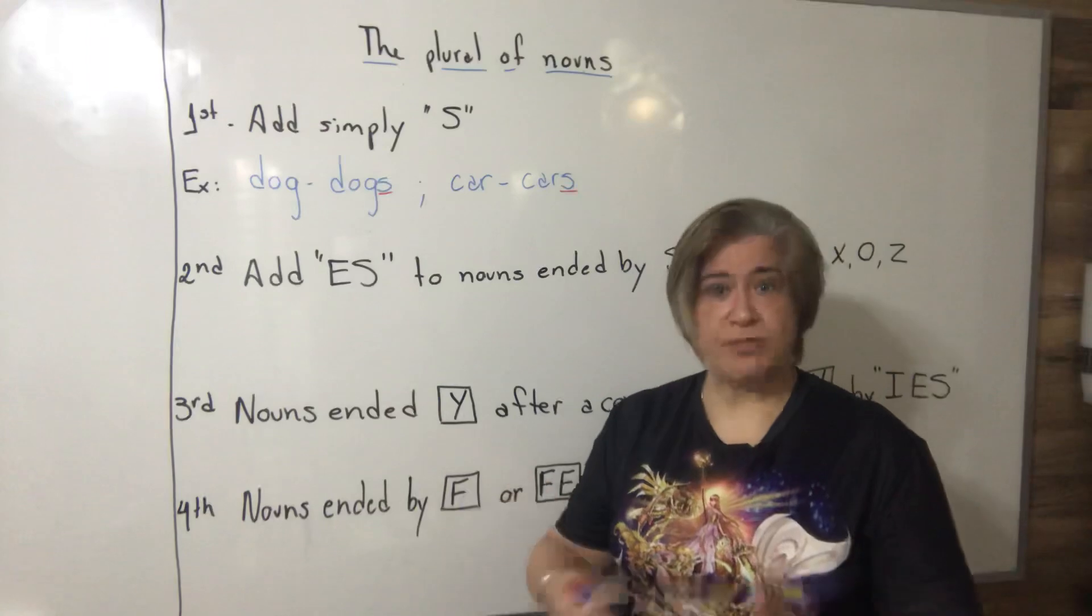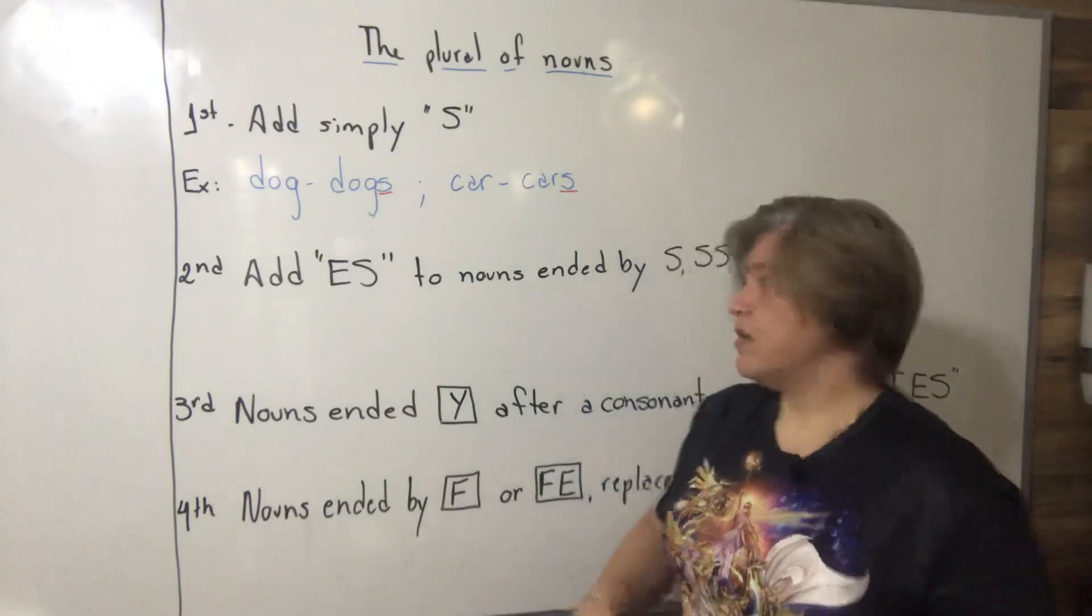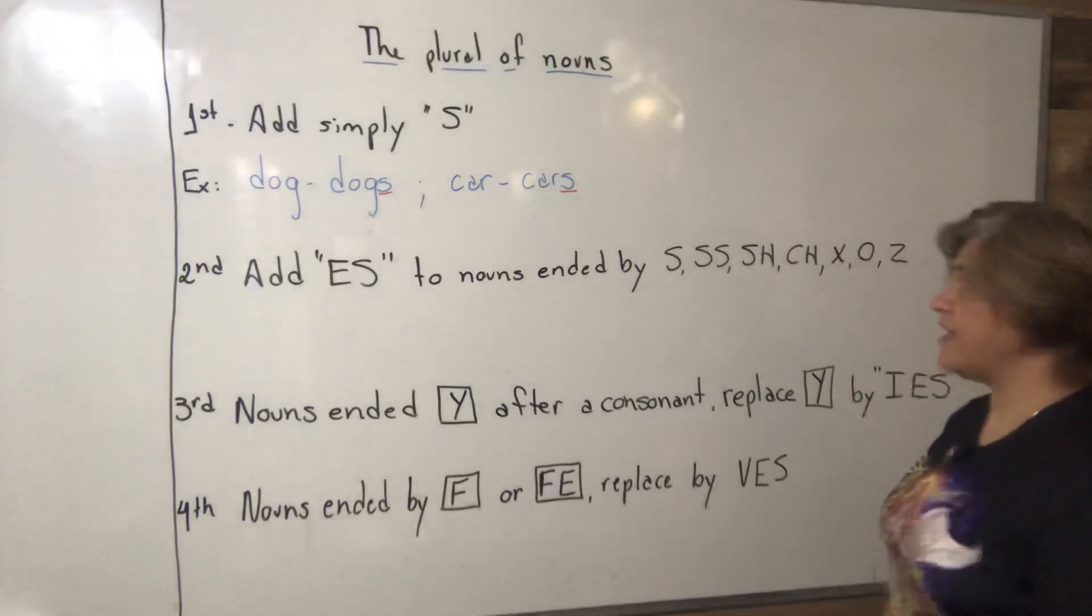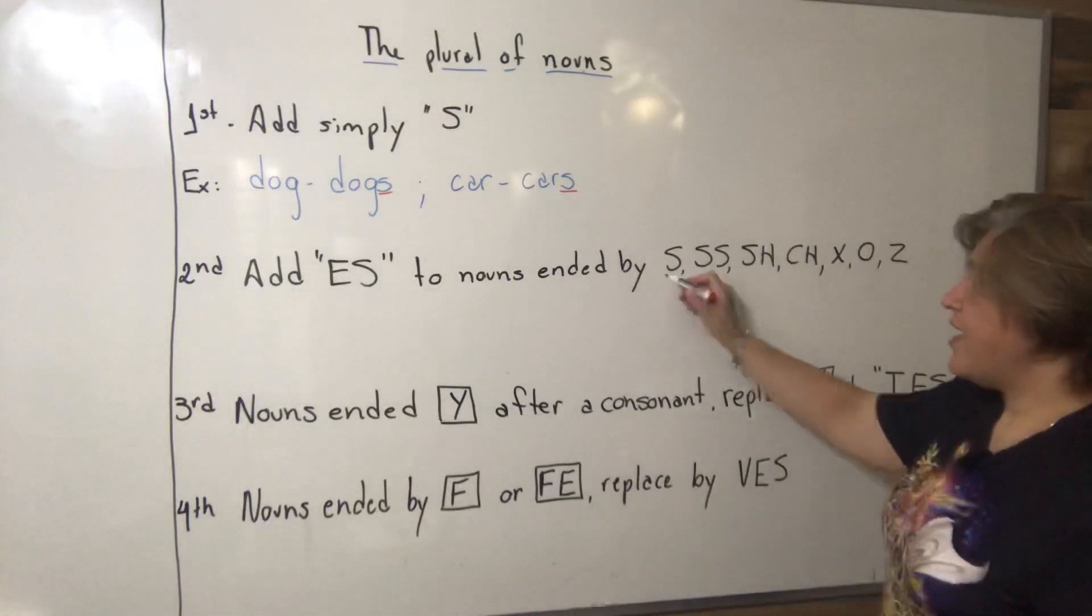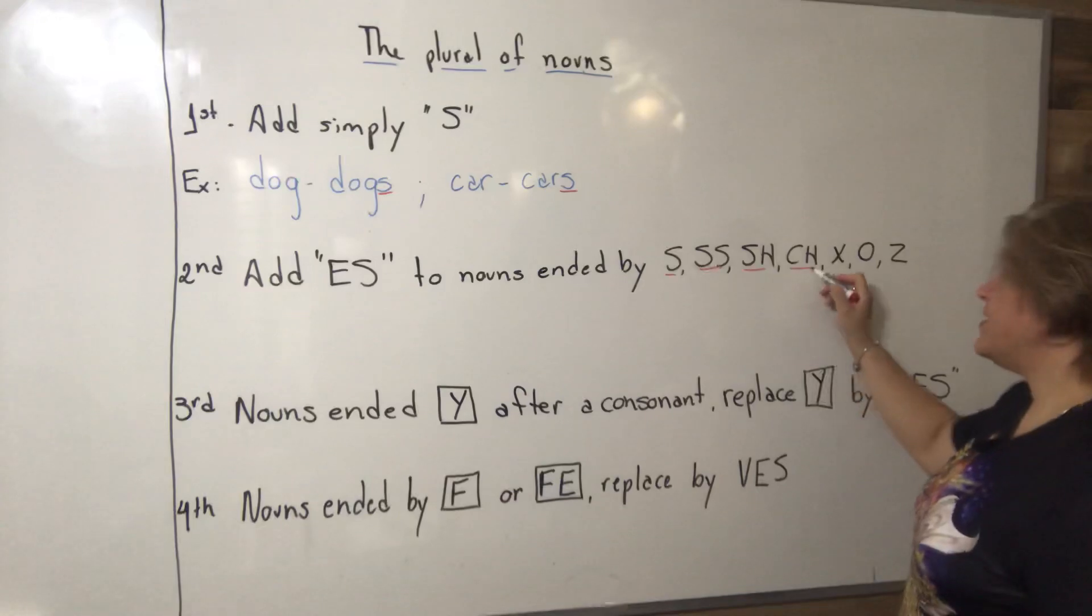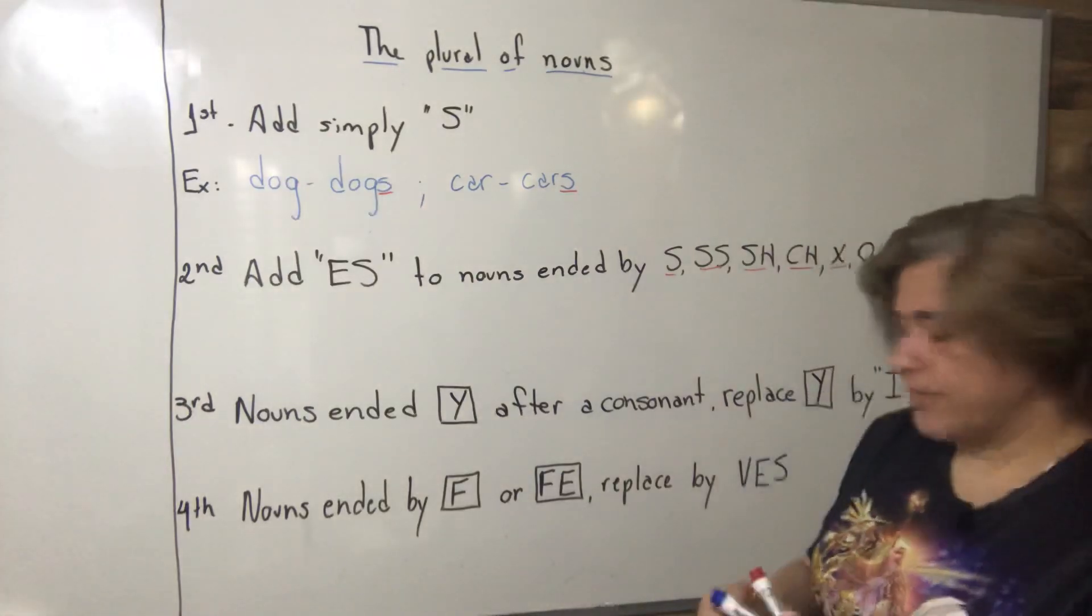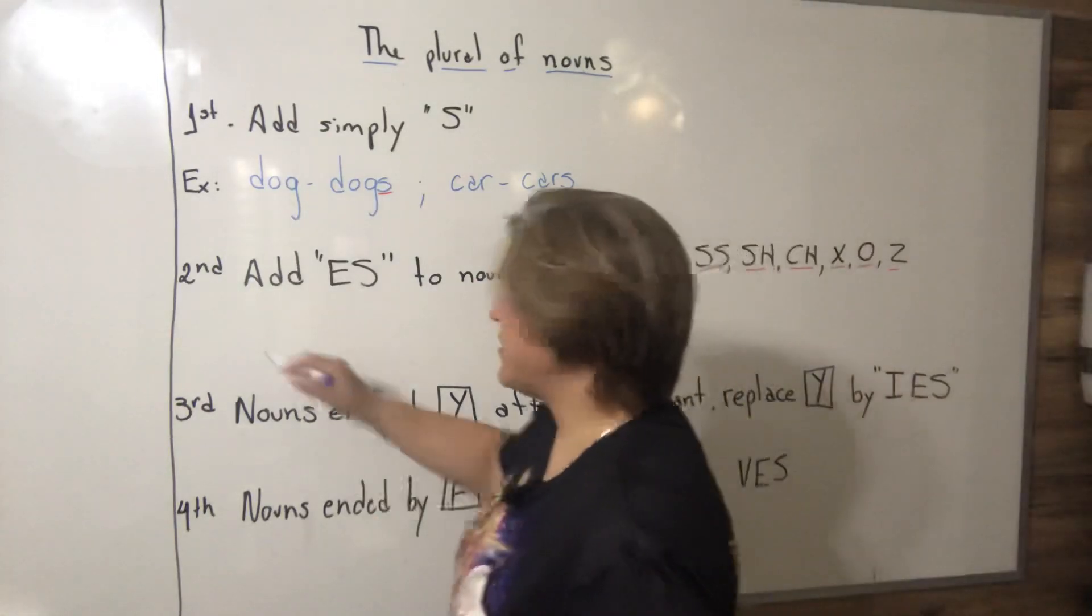The second rule now is what we call the exceptions. We have add ES to nouns ended by S, SS, SH, CH, X, O, and Z. Let's see some examples.